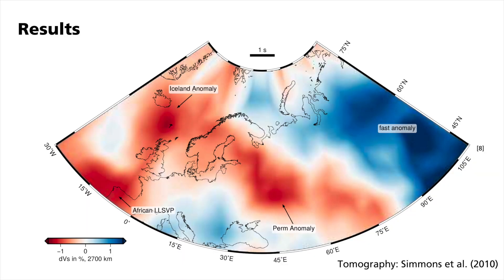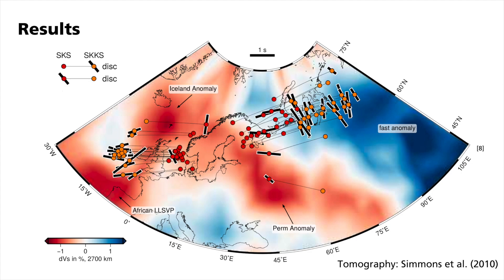And is the hypothesis of an anisotropic D double prime supported by other studies? Yes, we compared our results with the horizontal tomographic slice computed for 2,700 km depth by Simmons and colleagues. In this depth, we can identify different large-scale structures. In the west, low-velocity anomalies dominate the picture. They are related to the northern extensions of a large low-velocity structure beneath Africa and a hot region further north, which potentially is responsible for the mantle plume beneath Iceland. Our results are shown here as pierce points in red and orange for the SKS and SKKS phases. The black lines are the fast axes, which are located exactly in a transition area from fast to slow seismic velocities. One potential explanation is anisotropy due to mantle flow in those environments.